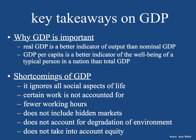Key takeaways on GDP: real GDP is a better indicator of output than nominal GDP, and GDP per capita is a better indicator of the well-being of a typical person in a nation than total GDP, because it captures per capita income and you can compare countries. But GDP doesn't have everything — there's a comparison between economic growth, which is GDP, and economic development. GDP does not take in all aspects of the social well-being of people — it's just a collection of income or output in a society.